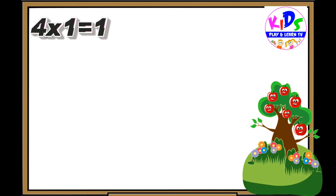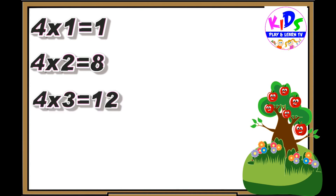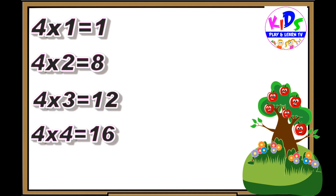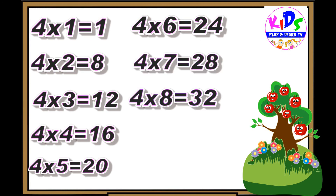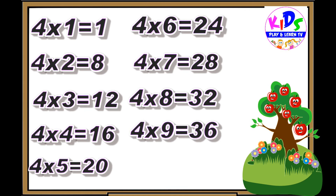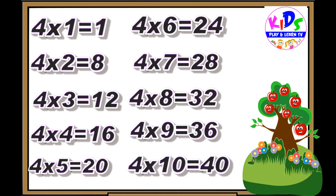Hey kids, let's repeat. 4 ones are 4, 4 twos are 8, 4 threes are 12, 4 fours are 16, 4 fives are 20, 4 sixes are 24, 4 sevens are 28, 4 eights are 32, 4 nines are 36, 4 tens are 40.